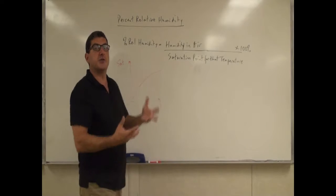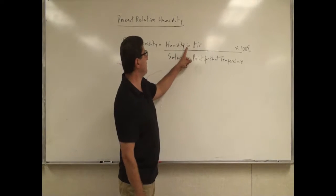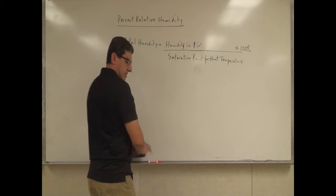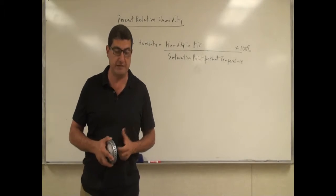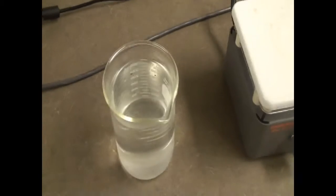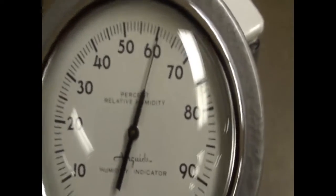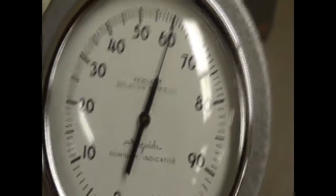So that means the hotter the temperature, the air can withstand more water particles before reaching its saturation. You have to divide the humidity in the air by the saturation point for that temperature. So then we have this device here — I can illustrate that to you. Let's see what the humidity in the air is and how the boiling water can affect that. We've got a beaker of hot water right here, and I could make it even hotter by putting it on the electric boiler. This is called the percent relative humidity indicator — an old-style one, but it is pretty accurate.